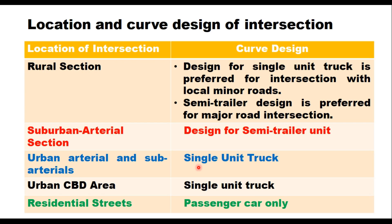The design vehicle for an intersection varies with the location. If the intersection is on a rural highway formed by a joining of a local minor road, the design vehicle should be a single unit truck. But if two major streets cross each other on a highway, then a semi-trailer is taken as the design vehicle for designing the turning radius. For suburban arterial sections, it is a semi-trailer unit. For urban arterials, sub-arterials, and urban CBD areas, it is a single unit truck. For residential streets, the curves at intersections are designed for passenger cars only.